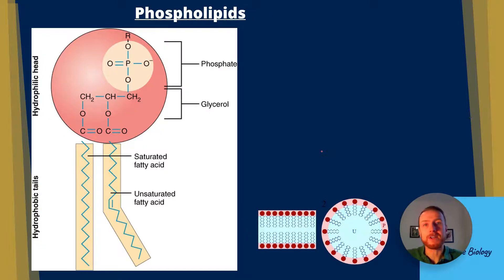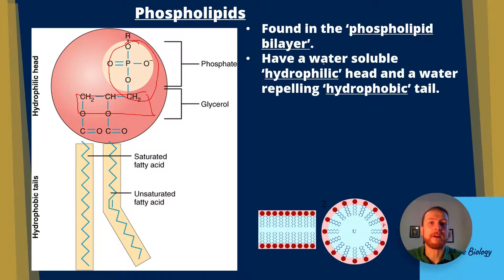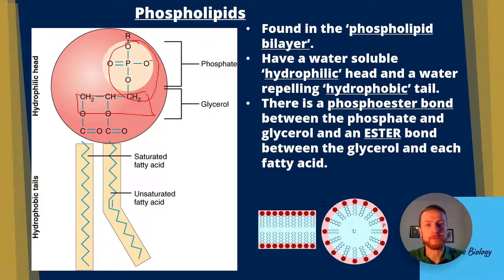Phospholipids next. They basically have one of the triglycerides replaced by a phosphate ion. You can see our PO4 at the top there, which is our phosphate head. We've got our glycerol there, which is our three carbon molecule. Then we've got two fatty acids coming off it with that shared oxygen in the ester bond. They're found in the phospholipid bilayer. They have a water-soluble hydrophilic head and a water-repelling hydrophobic tail. There is a phosphoester bond between the phosphate and glycerol and an ester bond between the glycerol and each fatty acid. We can see here hydrophobic tails at the bottom, hydrophilic head at the top. It's really important you remember that.